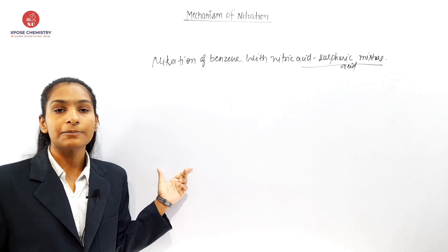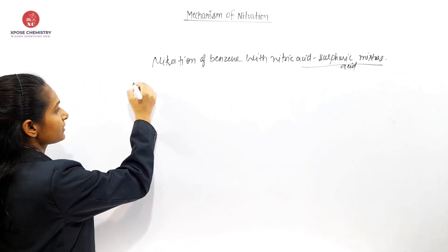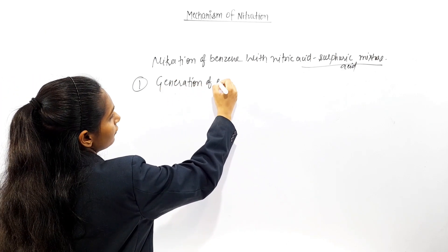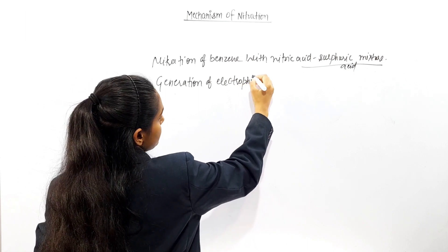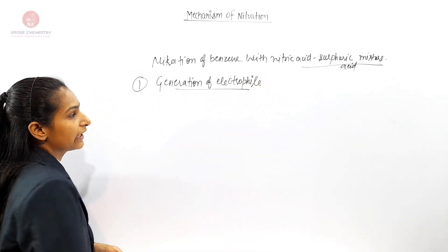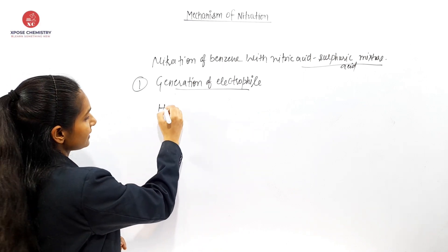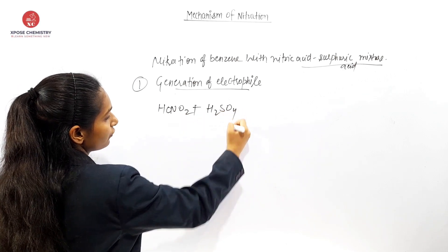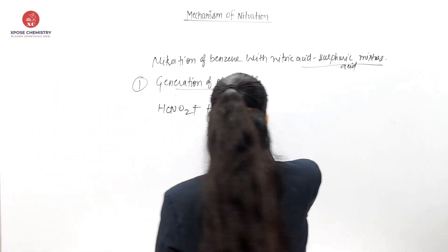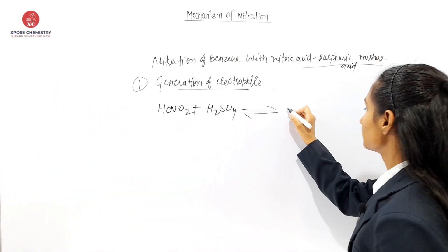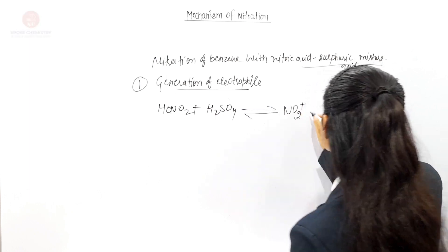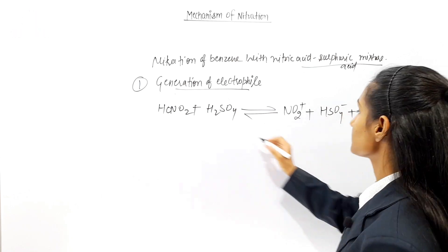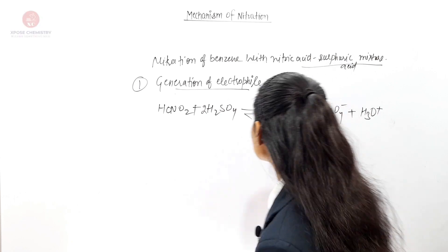What is the first step? The first step is Generation of Electrophile. The electrophile is generated from HNO3 plus H2SO4 — Sulfuric Acid and Nitric Acid.